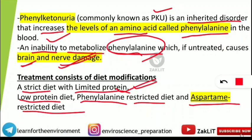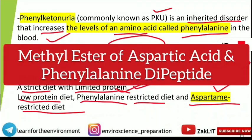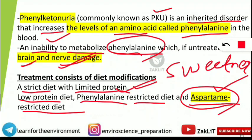Aspartame is an artificial non-saccharide sweetener used in bakeries and other industries as a sugar substitute. It is relevant to PKU because it is a methyl ester of aspartic acid and phenylalanine — a dipeptide. Since aspartame contains phenylalanine, patients with PKU are advised to restrict it in their diet. I hope you have written all these things down. Let's move on to the next question.